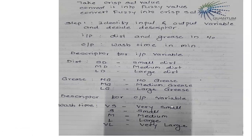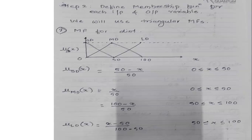Descriptors for the output variable will be: very small, small, medium, large, and very large — all in the time range. For example, 0 to 10 for very small, and so on. We will see in detail what the ranges are.